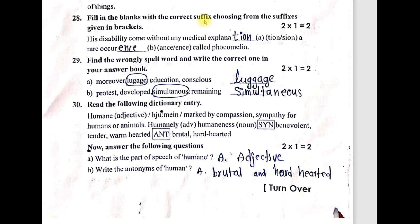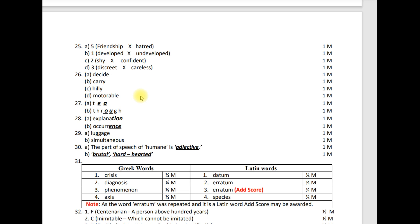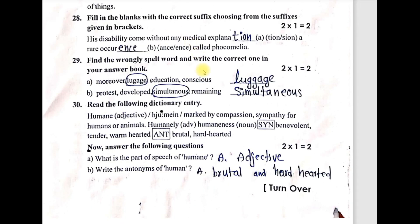Question 28 — suffix: correct suffixes — right answer: occurrence with suffix -ence. Question 29 — find the wrongly spelled words. Two sets of four words each. Identify the wrong one and write the correct spelling. Luggage — L-U-G-G-A-G-E — one G is missing, that is wrong. Other words: protest, developed, and simultaneous — right answer: simultaneous — spelled S-I-M-U-L-T-A-N-E-O-U-S.